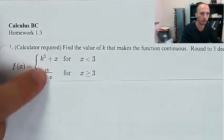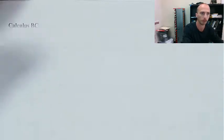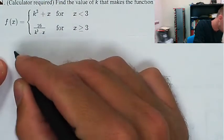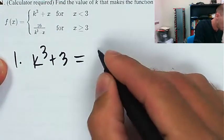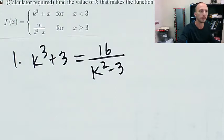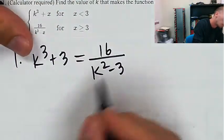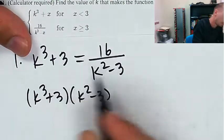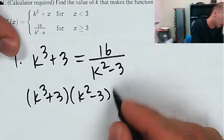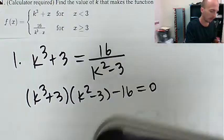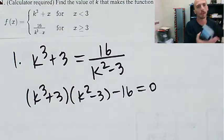Find the value of k that makes the function continuous. I'm going to have to use a calculator, and I'm going to need to round to three decimal places. Okay, so what I'm going to do is I'm going to set these two pieces of function equal to each other at the value of x equals 3. I'm going to subtract 16 and set it equal to 0 so that I can just calculate the zero on the calculator.